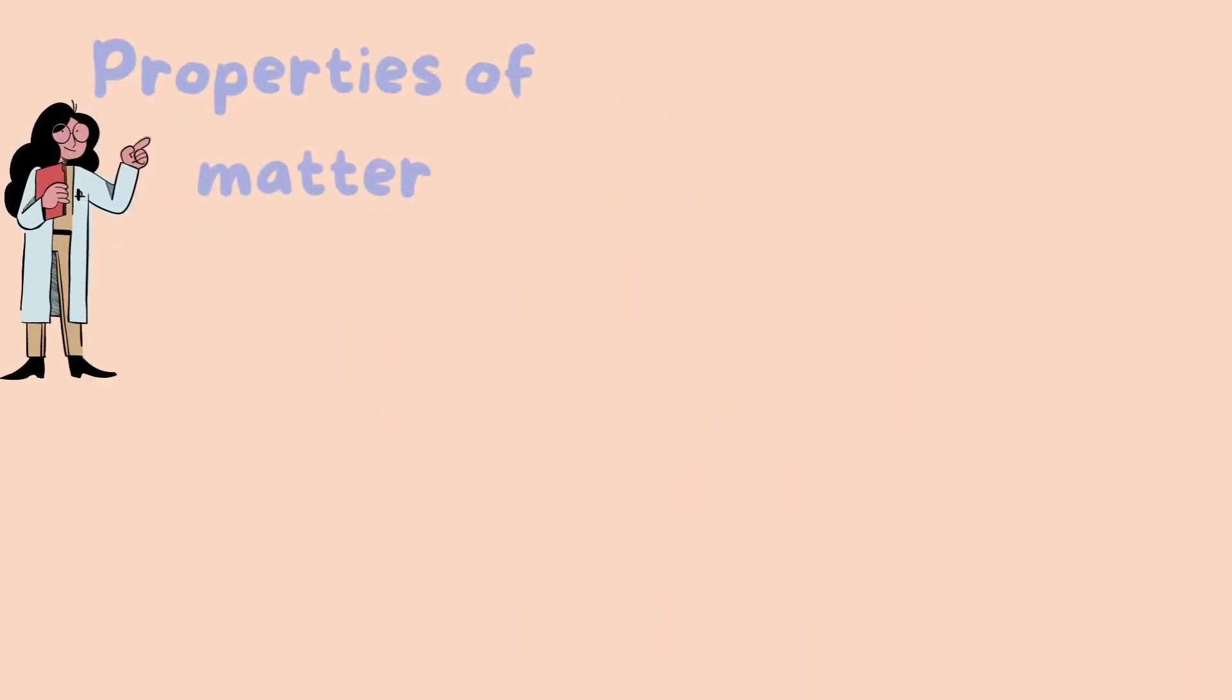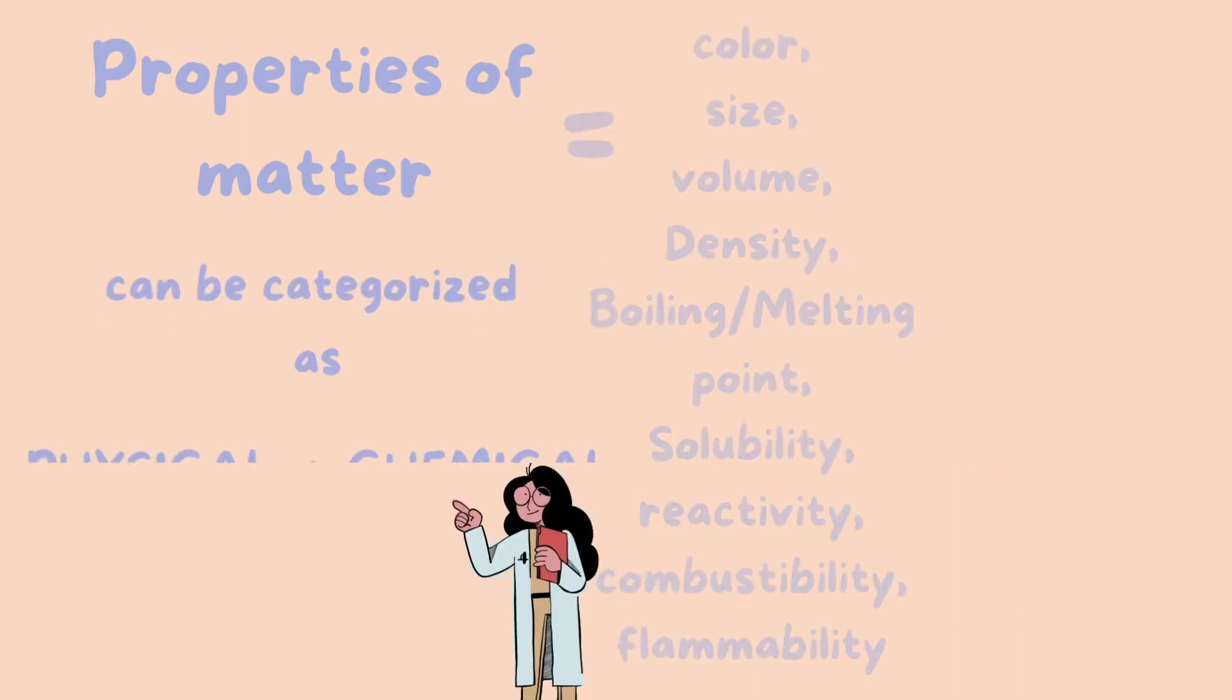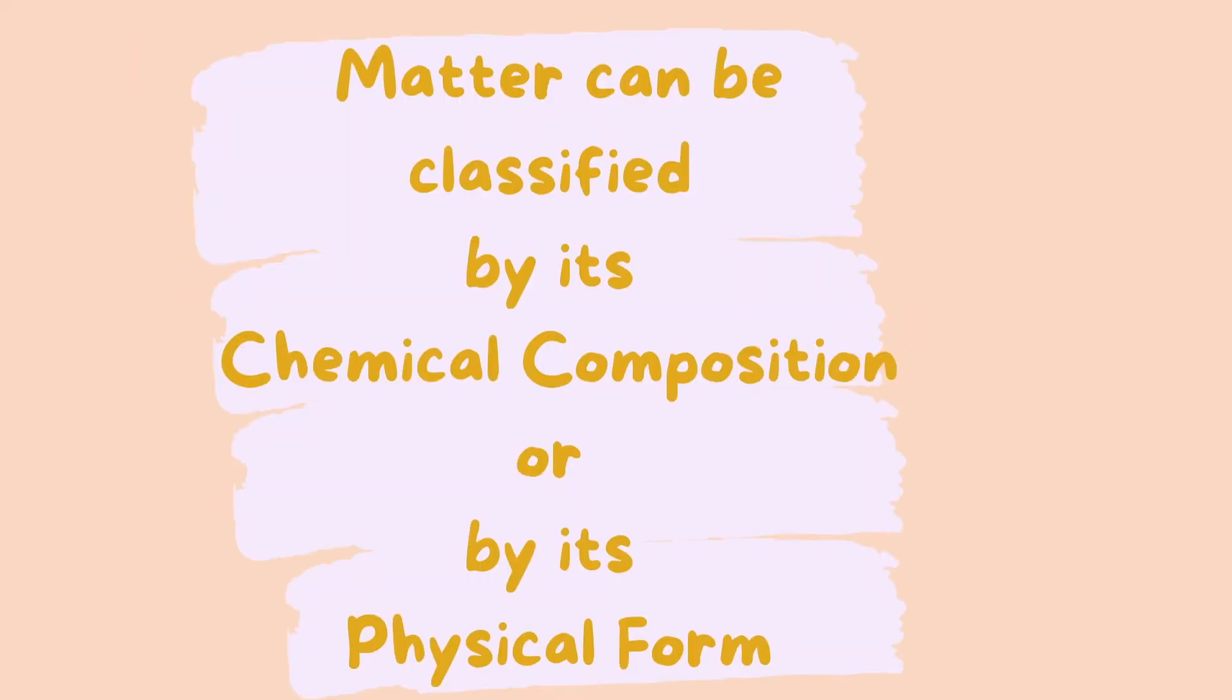There are properties of matter that you should be familiar with, and properties just means like characteristics. So these characteristics of matter are color, size, volume, density, boiling, melting point, solubility, reactivity, combustibility, flammability, and there really are more, but you get the point. So these can all be categorized as either a physical or chemical property, which we will be discussing later.